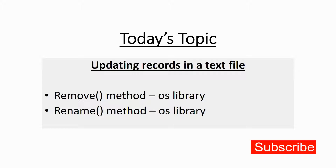Welcome back to the channel. Today's topic is how to update records in a text file. In the previous tutorial, we learned how to create records, store them into a file, and display them using a delimiter. Today we are going to understand how to update records — meaning if you want to make changes to a stored record, such as changing a student's name, that is called updating a record.